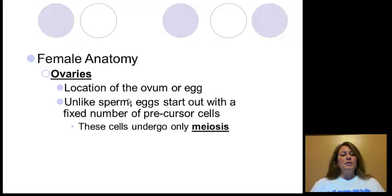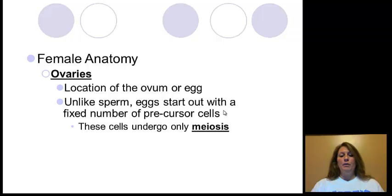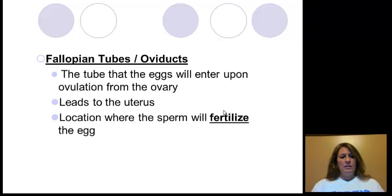Female egg cells only go through meiosis, not mitosis. So females are born with a fixed, pre-set number of eggs — between 400 and 500 — formed while still inside the mother's womb. Once those eggs are used up, passing out of the body every month, that is approximately when females will go through menopause.